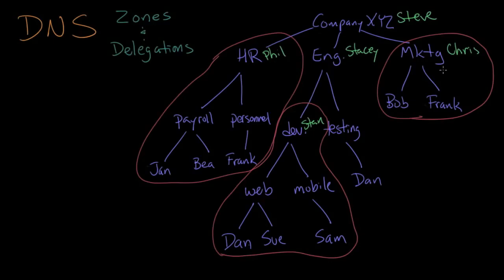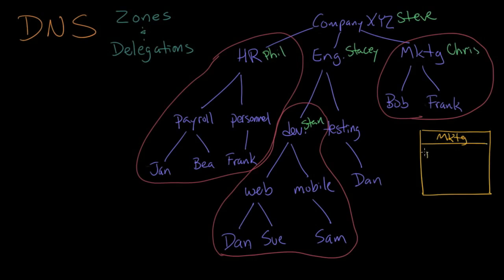What each one of these division directors has done is make a phone directory for each of their divisions. So Chris is going to make one — the marketing phone directory — and put two people in there: Bob at extension 20 and Frank at extension 22.